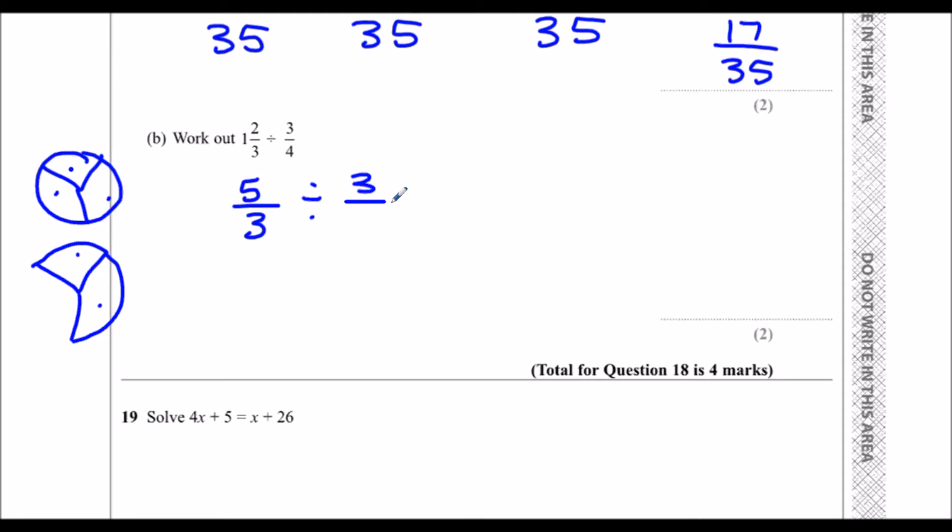Divided by three-quarters. So to divide fractions we say dividing is the same as timesing and flipping the number over. So dividing by three-quarters is the same as timesing by four-thirds. Some people call it stick, twist, and flip. So we change it to a times and flip over the second fraction.